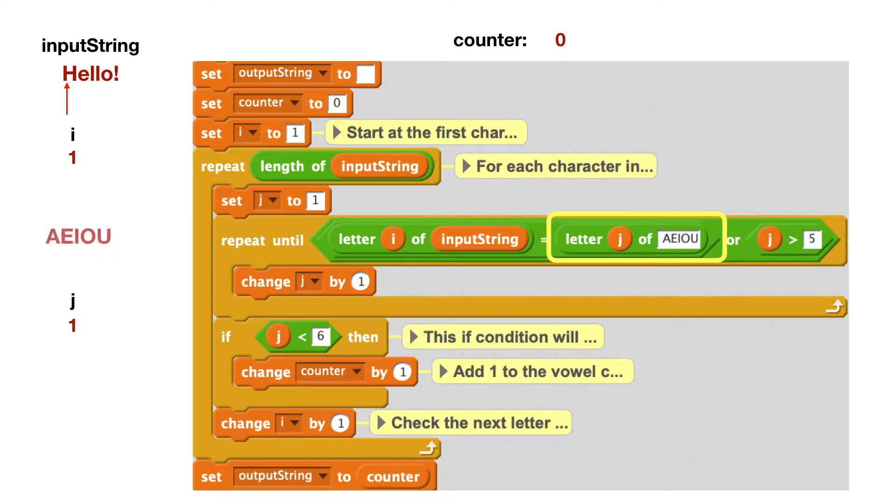And we want to see if it equals letter J of A, E, I, O, U. So I hard-coded what we're searching through. You could have put that in a variable, but I hard-coded A, E, I, O, U. Now J is one, and I'm looking now at string A, E, I, O, U. So it's pointing to the A in A, E, I, O, U. So what is the left part of this OR statement doing? It's comparing the H in our input string to the A in our vowel string. Now are they equal? Does H equal A? Well, no, it does not. So that part of our OR statement is false.